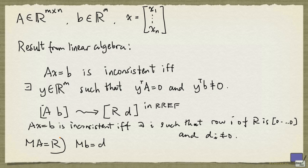So to get row i in R, we take row i of M, multiplied by A, and to get the i-th entry of D, we take row i of M, multiplied by B.